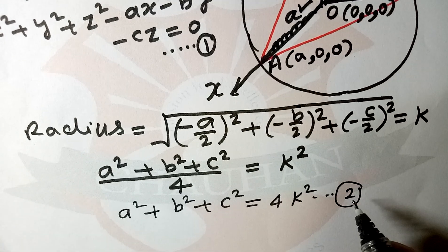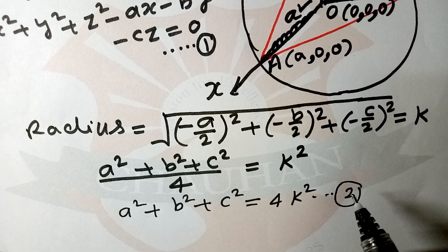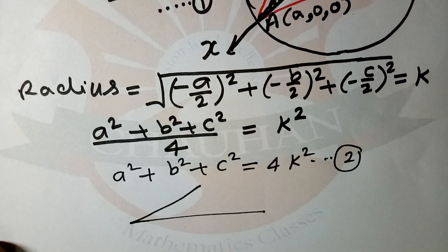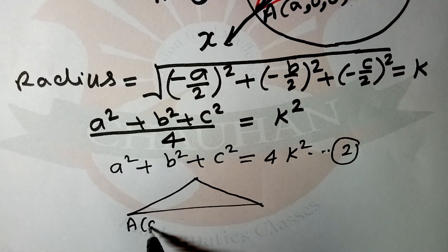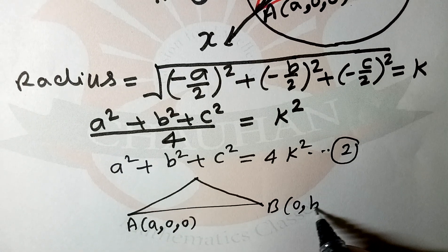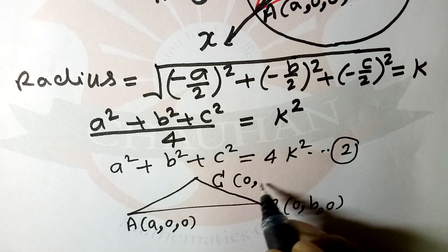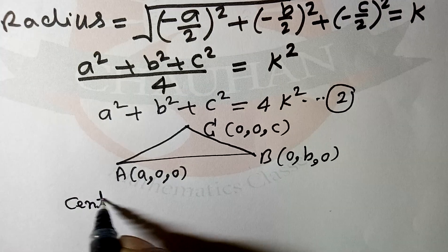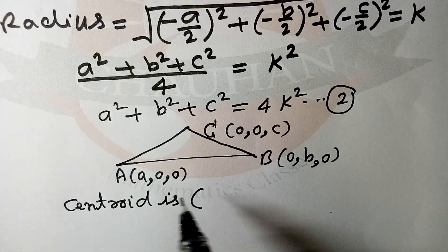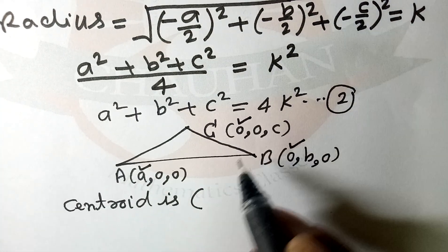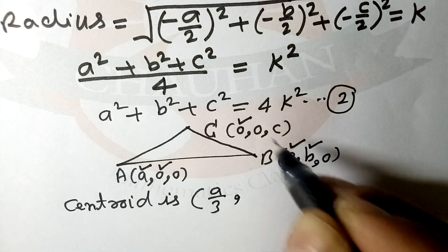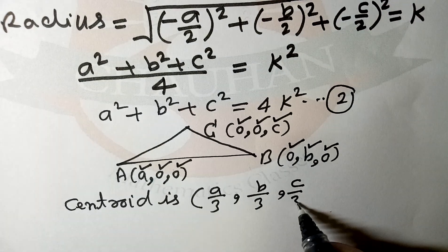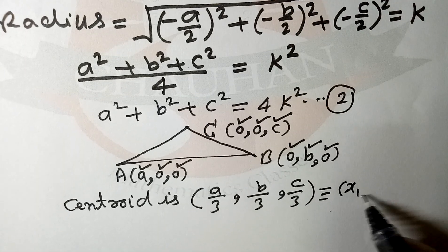We call it equation number 2. We have to find the centroid of triangle ABC. Triangle ABC has vertices A(a, 0, 0), B(0, b, 0), and C(0, 0, c). The centroid is given by: (a+0+0)/3, (0+b+0)/3, (0+0+c)/3. We call this centroid (x1, y1, z1).